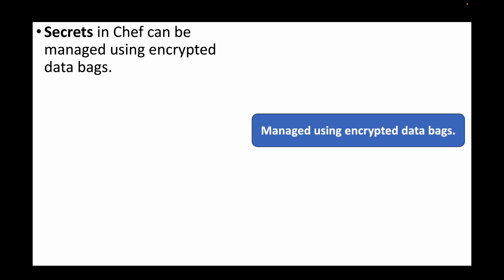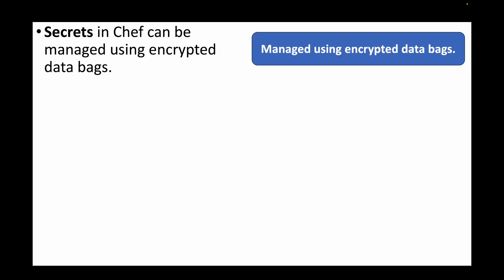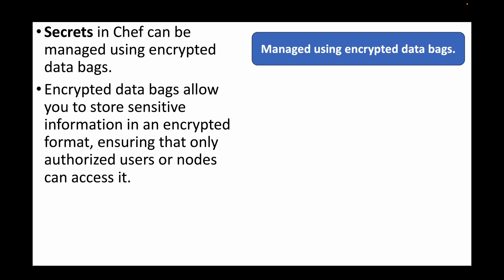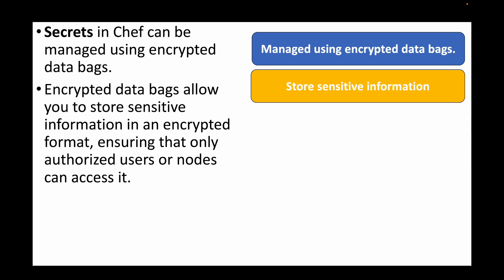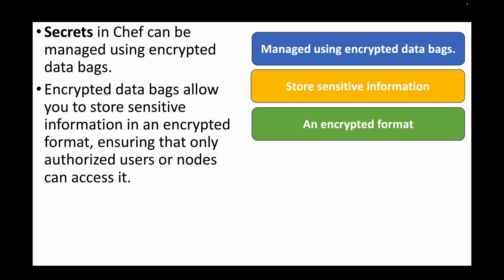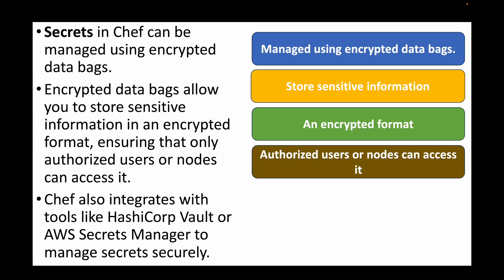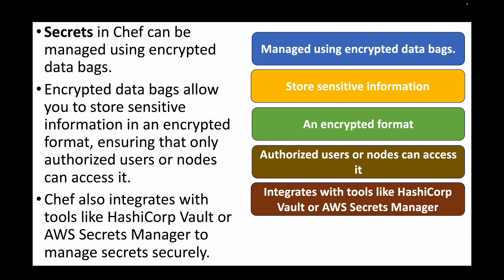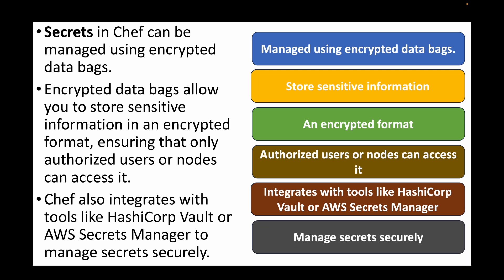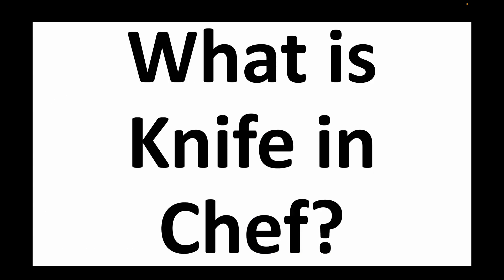The next question is: how do you manage secrets in Chef? Secrets can be managed using encrypted data bags — we store secrets in a data bag and encrypt it. Encrypted data bags allow storing sensitive information in an encrypted format, ensuring only authorized users or nodes can access it. We can also integrate Chef with third-party tools like HashiCorp Vault or AWS Secrets Manager to manage secrets securely.